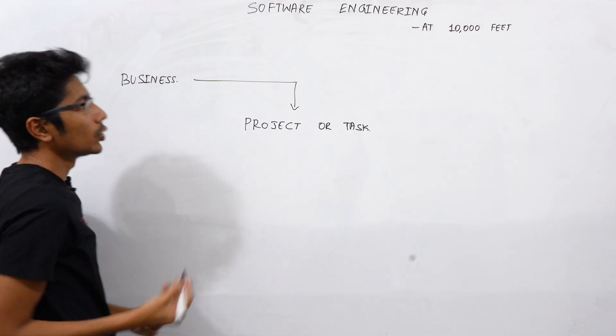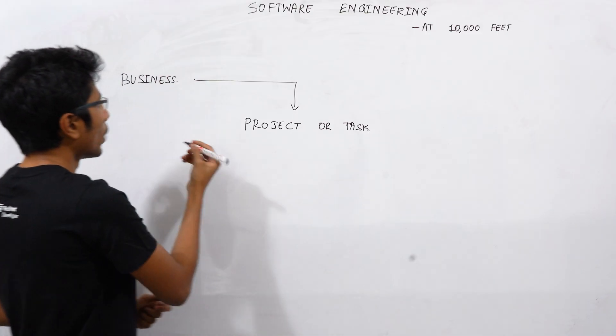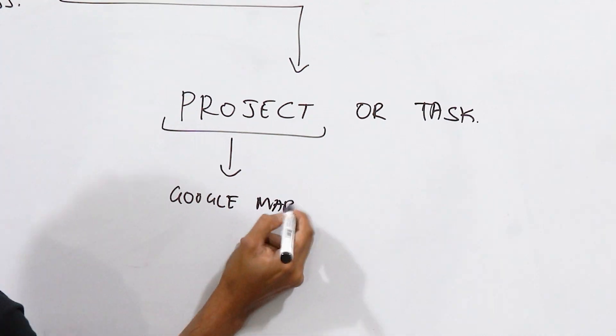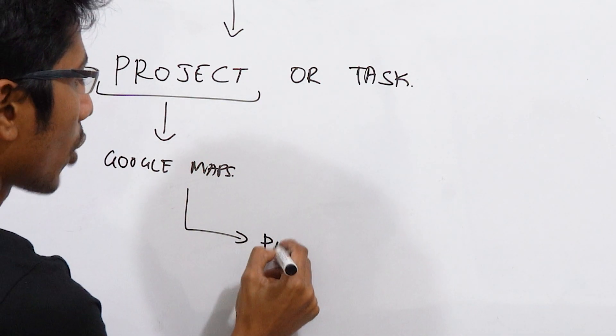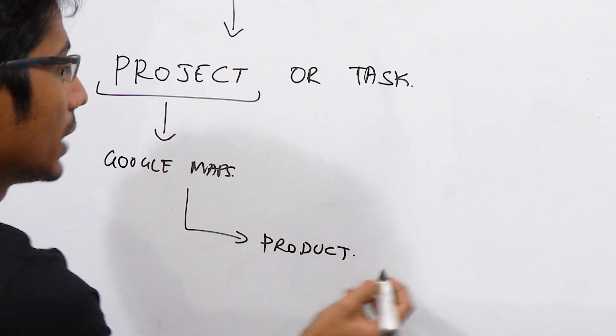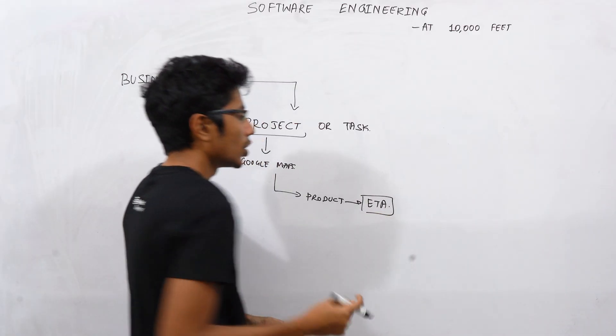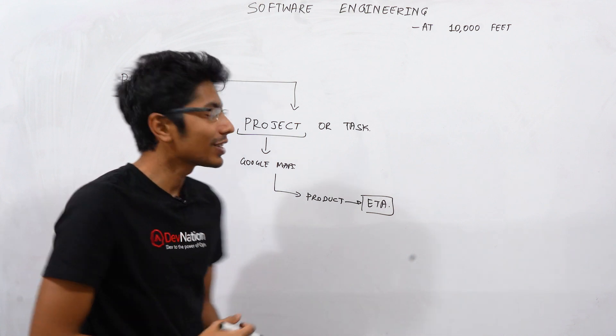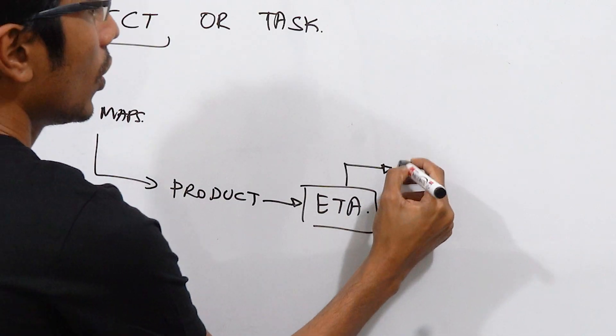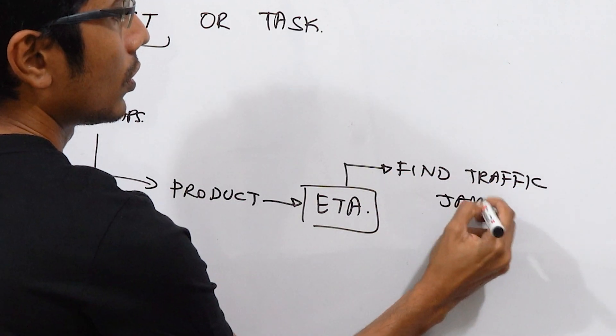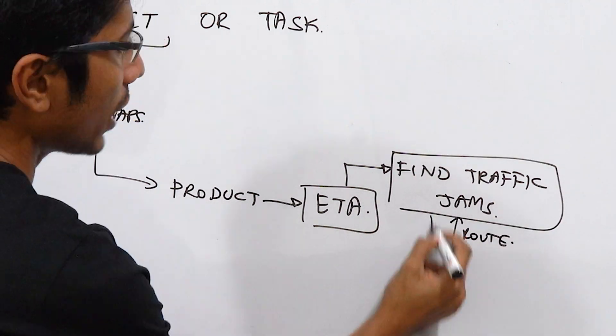So let's say you have joined Google. Google is a business. It has one project which is Google Maps. Your team belongs to one product of Google Maps. Let us assume that you calculate ETA. In this team, you the young software engineer has been assigned to find traffic jams and this will help you set the ETA in the right way.